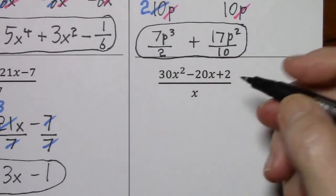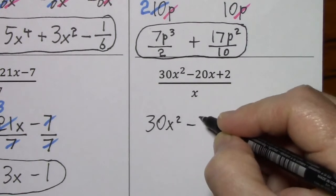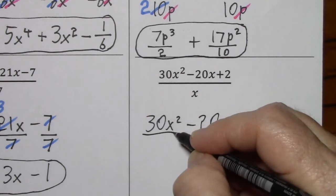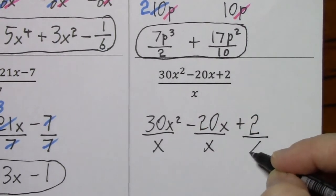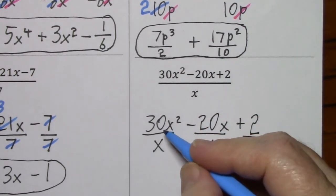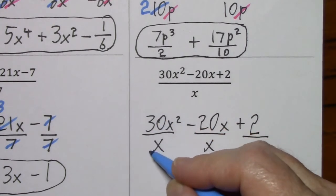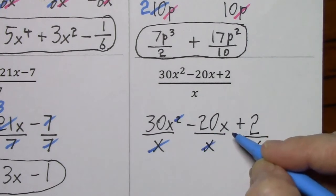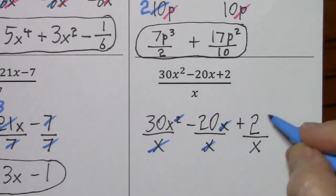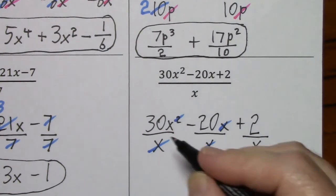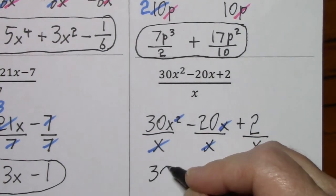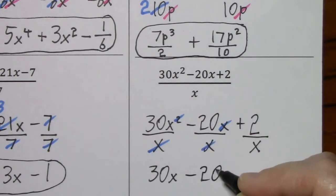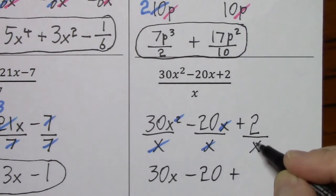We'll rewrite our numerator and put our x in each denominator, then simplify each fraction. No way to simplify the 30, but I can cancel out x and subtract 1. Cancel out x, cancel out x. Here we can't simplify anything at all. So we're left with 30x, negative 20, positive 2 over x.